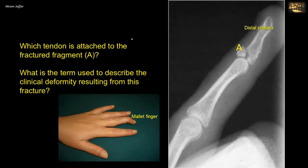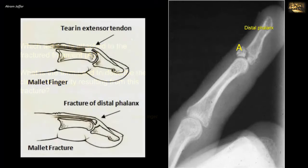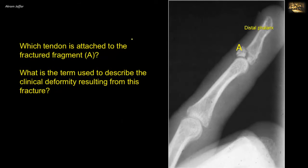This deformity can result from rupture of the extensor tendon near its insertion with or without avulsion fracture. In this case, we have an avulsion fracture, but sometimes it is only the tendon that ruptures. There is an avulsion fracture of the base of the distal phalanx. Whether there is a fracture or not, rupture of the extensor tendon will result in mallet finger.